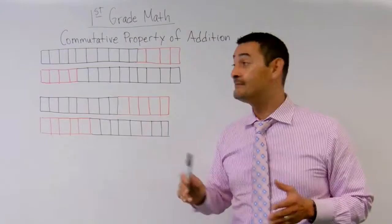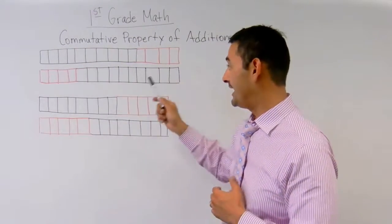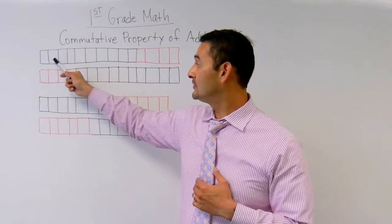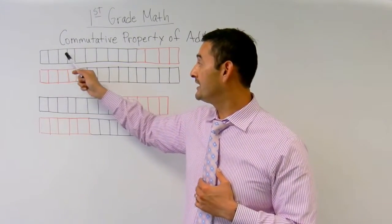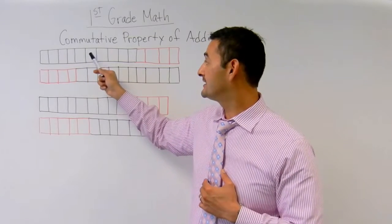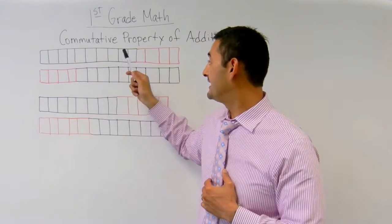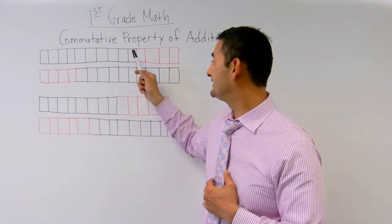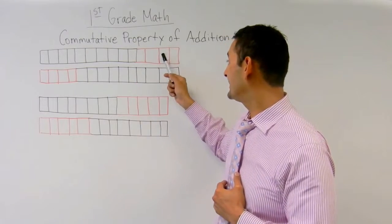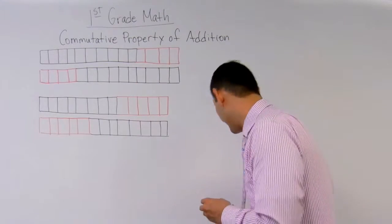Now let's see how many boxes we have in all. Ready? One, two, three, four, five, six, seven, eight, nine, ten, eleven, twelve, thirteen, fourteen. Awesome.